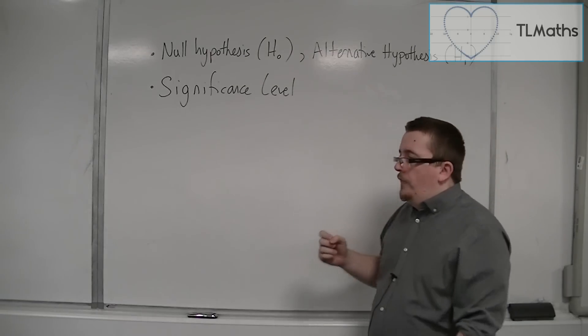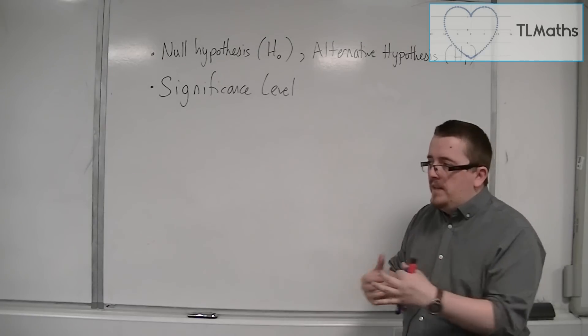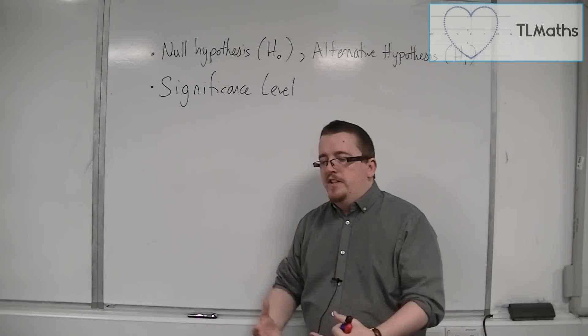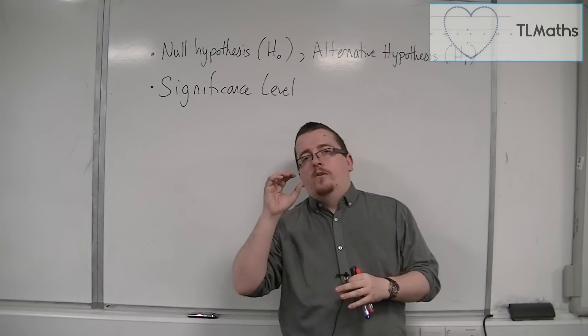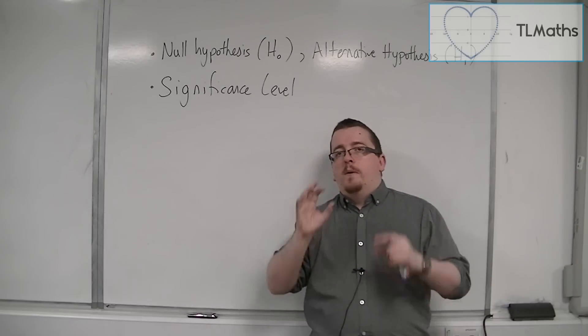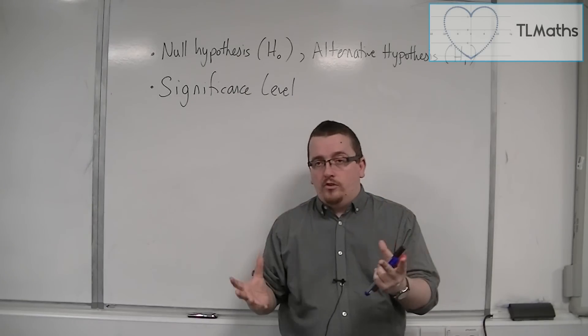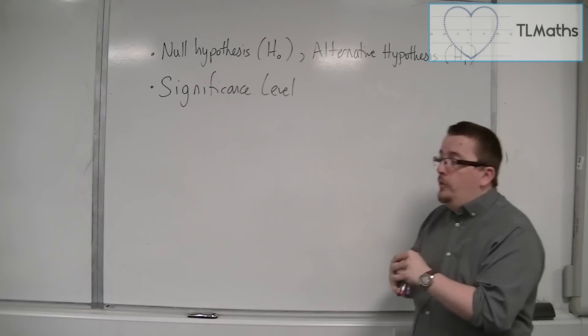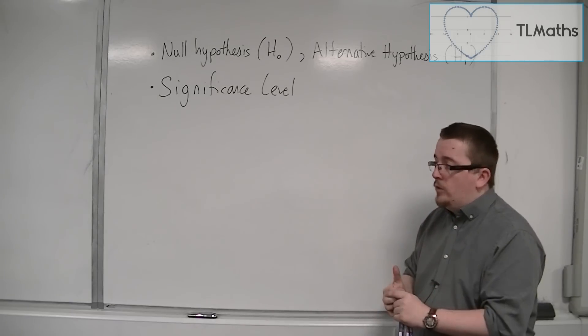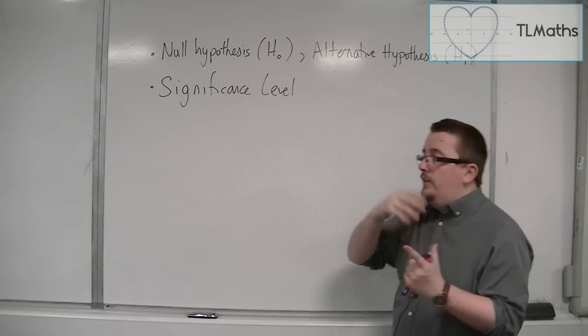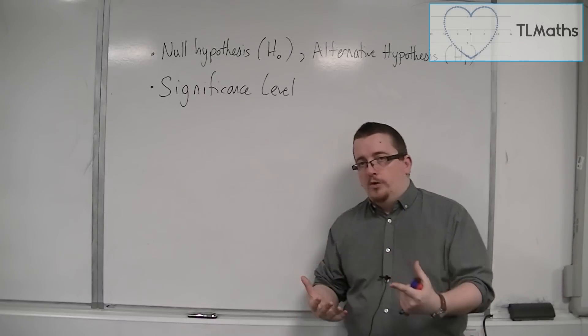So once we have that, obviously then you would collect some data. But that's going to be done for us. And then we would conduct the test doing the necessary calculations. Now we are looking at this from a binomial probability point of view in this section. So we would use the binomial tables to identify the probability in question. We would check it against the significance level and then interpret the result accordingly.